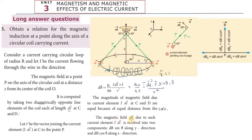The next point: the magnetic field dB vector due to each current element idL is resolved into two components — dB sinθ along the y-direction and dB cosθ along the z-direction. In the diagram, we can see how the magnetic field dB due to each current element is resolved into horizontal and vertical portions: dB sinθ and dB cosθ.